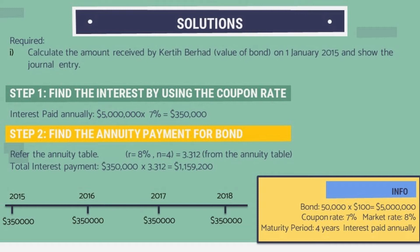For the first requirement, we determine whether the bond is issued at a discount or premium. In this case the bond is issued at a discount because the coupon rate is lower than the market rate. We need to find the exact discount amount. First, we calculate the annual interest using the coupon rate: the bond amount multiplied by 7% equals $350,000 per year.